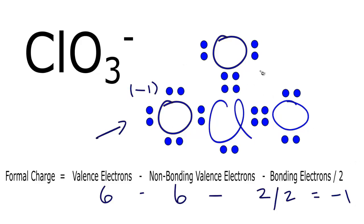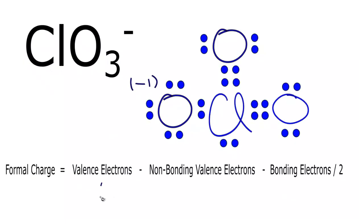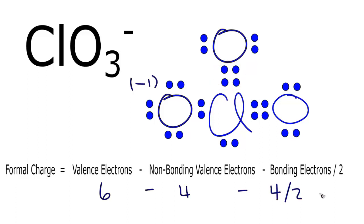Now let's look at this oxygen with the double bond. Oxygen has six valence electrons, minus non-bonding: there are two, four non-bonding valence electrons. Minus bonding: two, four bonding electrons, divided by two. Six minus four is two, minus four over two is zero. So the formal charge on this oxygen is zero.